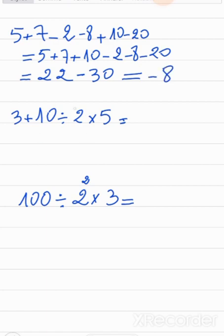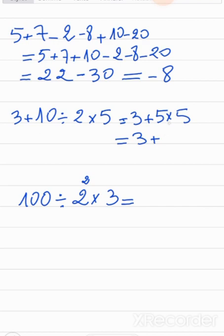Here we have addition, division, and multiplication. Addition is the weakest, so it goes last. For division and multiplication, I go from left to right: 10 divided by 2 is 5, times 5 is 25. Now I have addition and multiplication — multiplication is strongest — so it's 25 plus 3, which is 28.